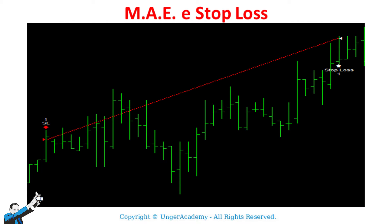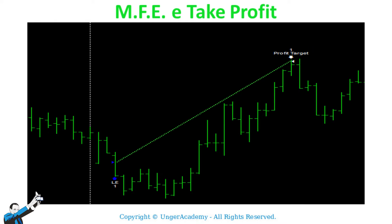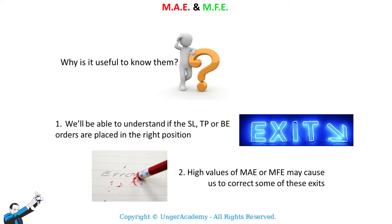If we understand correctly what these two values represent, it's clear that stop-loss and take-profit can be seen as borderline cases. The monetary value of the stop-loss coincides with the MAE of a trade closed by the stop. Similarly, the monetary value of the take-profit coincides with the MFE of a trade closed at the target. By extending this analysis to all the trades made by our strategy, we can better understand whether our stop-loss, take-profit, or break-even orders are placed at the right level, and high values of these metrics should lead us to understand the reasons behind them and potentially adjust our exit levels.